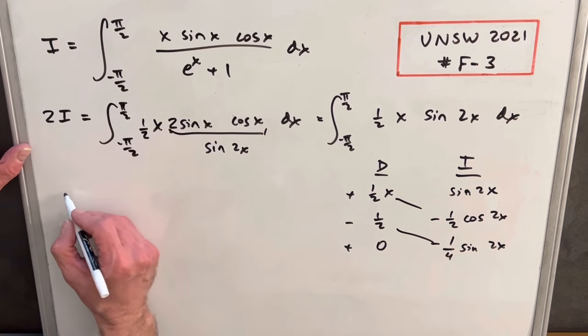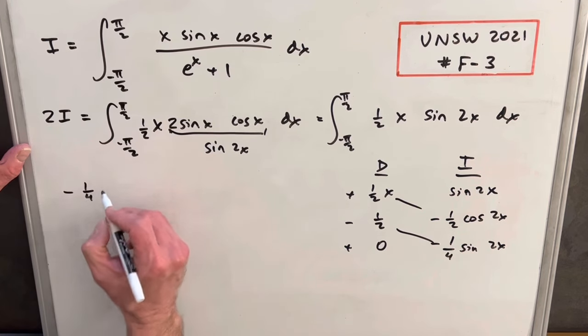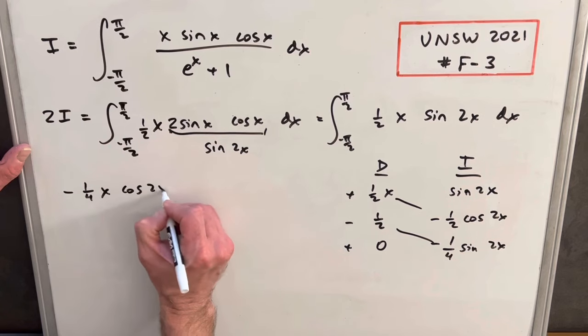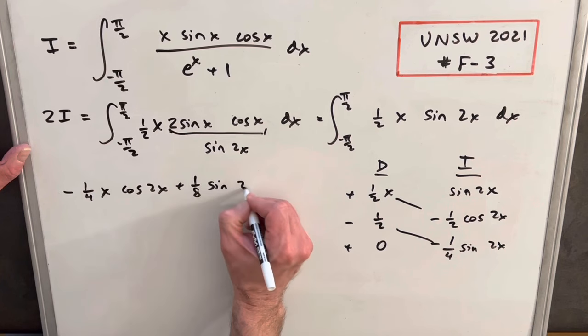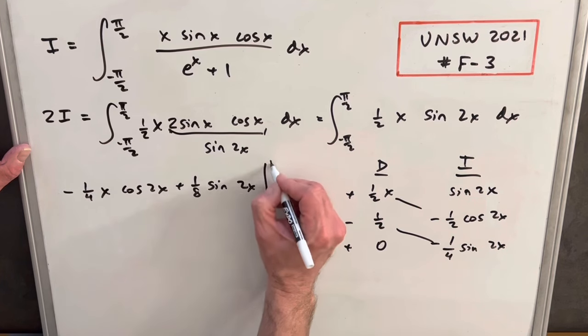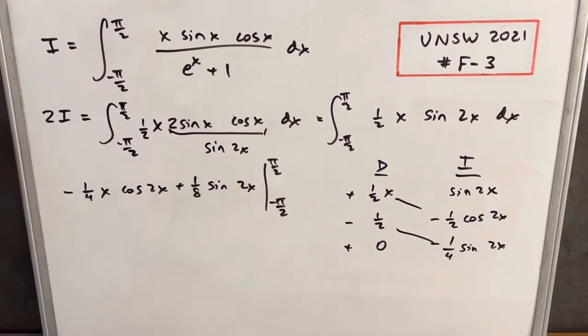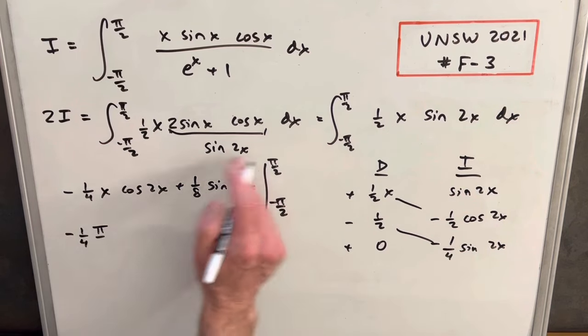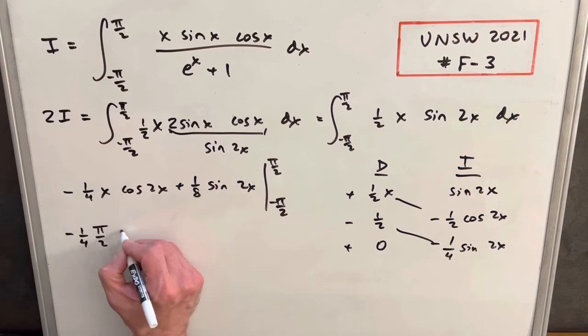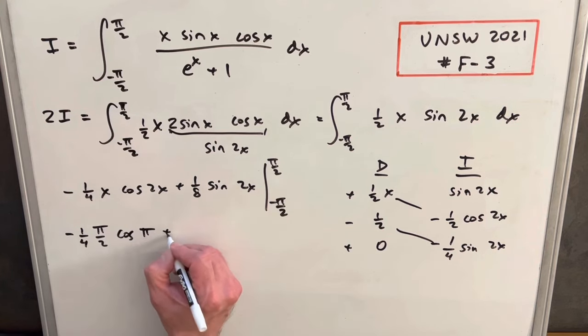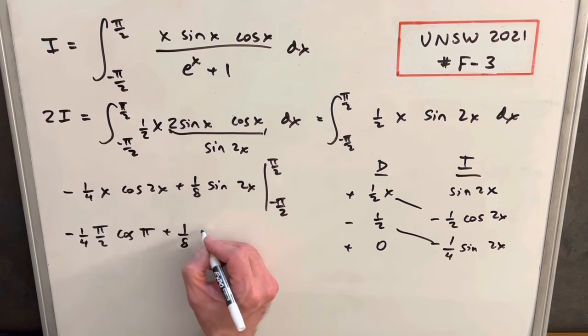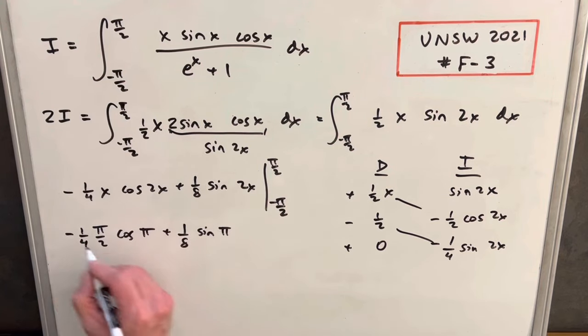Our solution is just going to be on these diagonals. We're going to have minus one fourth x cosine 2x. And then here we're going to have plus one over eight sine 2x. And we're evaluating this from pi over 2 to minus pi over 2. We'll just evaluate this. Minus one fourth times, plugging in our pi over 2 here. Cosine of 2 times pi over 2 is going to be pi. Plus one eighth sine 2 times pi over 2, sine of pi.